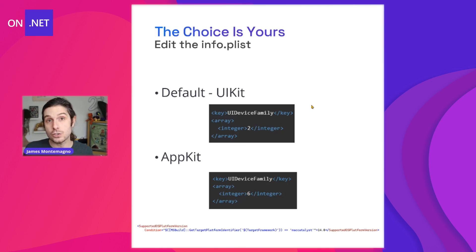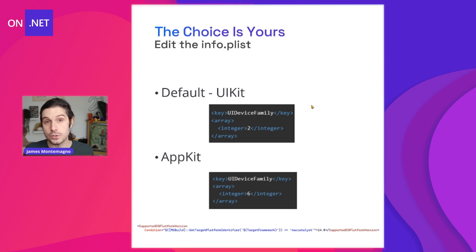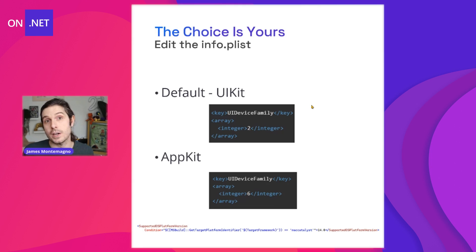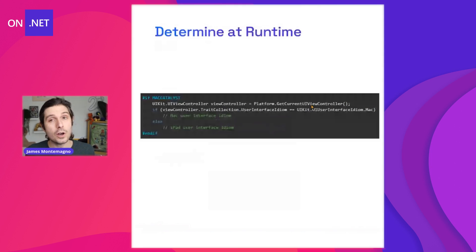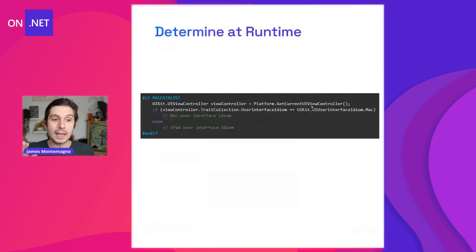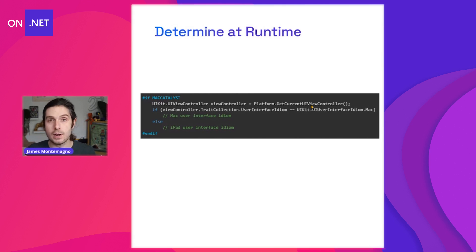The other thing you're going to need to do for Mac Catalyst apps is switch over the supported OS platform version to 14.0, which is equivalent to macOS 11, so you'll want to make sure that is updated. You can also determine what mode you're in at runtime. Built into .NET MAUI are platform helpers, and you can get the current UIViewController and determine what the user interface idiom is — whether it's Mac or the iOS/iPad equivalent — and make decisions based off of that at runtime.